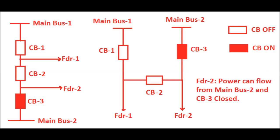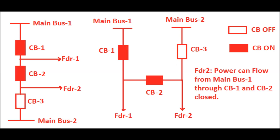Similarly, how does feeder 2 get power? There are two options: one from main bus 2 and another from main bus 1. From main bus 2, feeder 2 can receive power through CB3 in closed position — CB3 being the circuit breaker towards the main bus 2 side. Again, feeder 2 can also receive power through main bus 1, in which case CB1 and CB2 must both be in closed positions. Isolator positions are not shown here for ease of understanding.